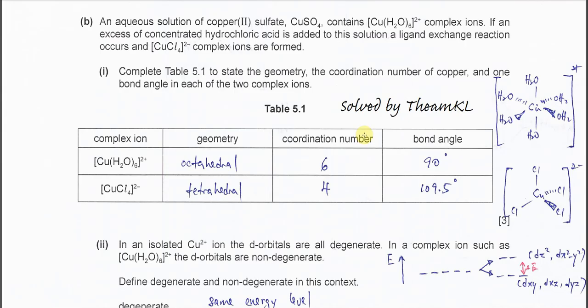Part B. An aqueous solution of copper(II) sulfate contains the hexaaqua copper(II) complex ion. If an excess of concentrated HCl is added to this solution, ligand exchange happens and it will form the tetrachloro copper(II) complex ion. Part 1: Complete Table 5.1 to state the geometry, coordination number of copper, and the bond angle for these two complex ions.